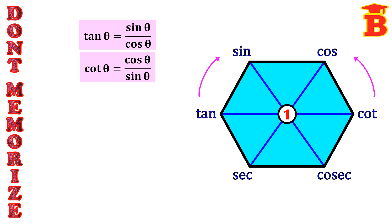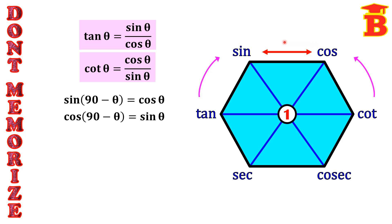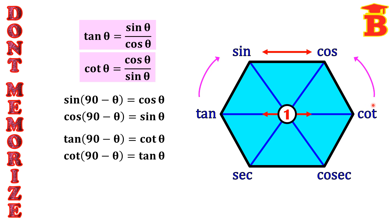Now taking the horizontal lines, we get the complementary angle formulas. Taking the first line, we have sin and cos, so we get sin(90° - θ) = cos θ and cos(90° - θ) = sin θ. Taking the second line, we have tan and cot, giving tan(90° - θ) = cot θ and cot(90° - θ) = tan θ.